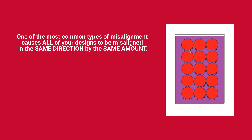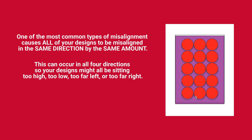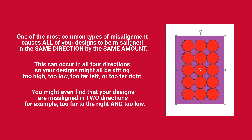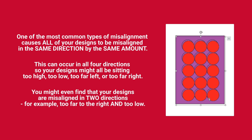One of the most common types of misalignment causes all of your designs to be misaligned in the same direction by the same amount. This can occur in all four directions, so your designs might all be sitting too high, too low, too far left, or too far right. You might even find that your designs are misaligned in two directions — for example, too far to the right and too low.